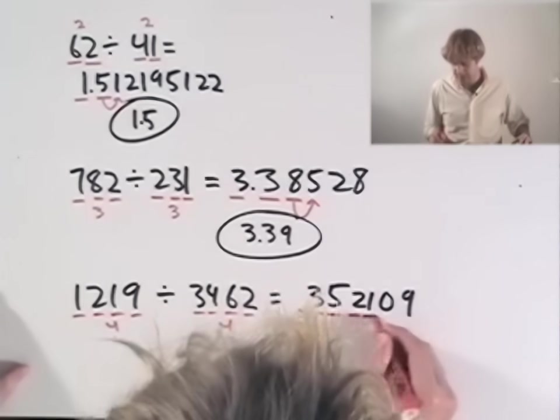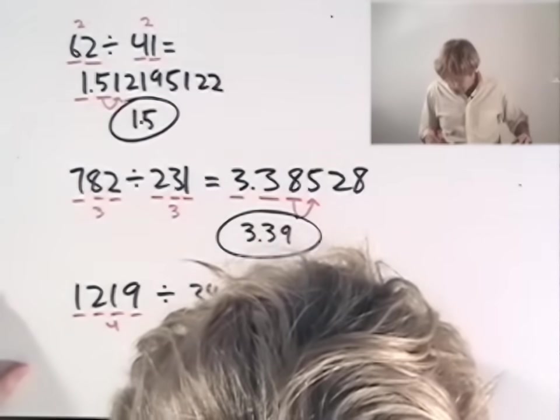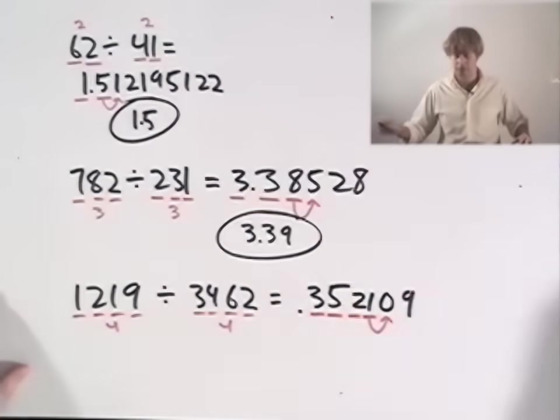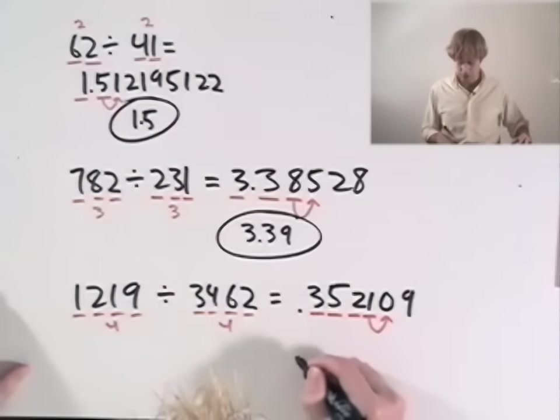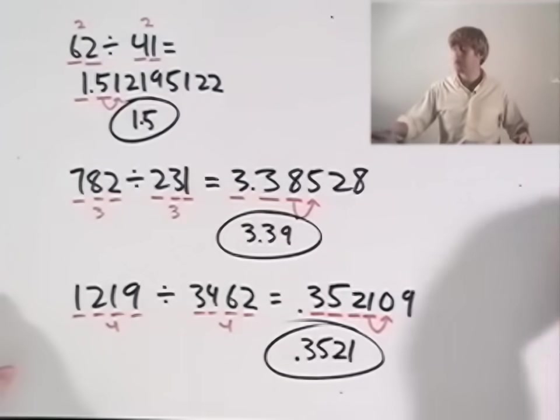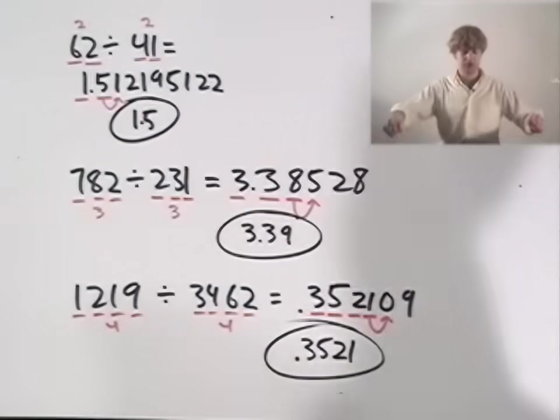This stays, this stays, this stays, and this stays. And I look at the number just to the right of the 1. It's a 0 so I certainly don't round it up. My final answer is going to be 0.3521 and there you go, rounded to four significant figures.